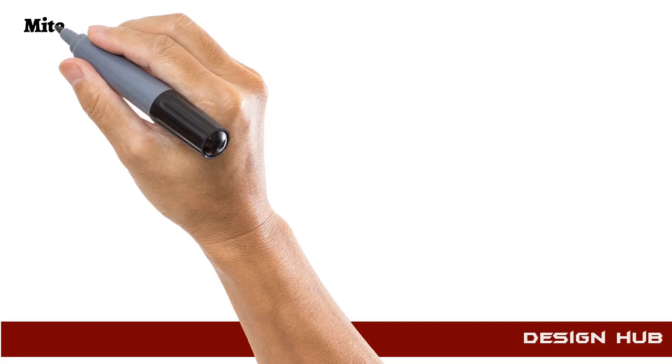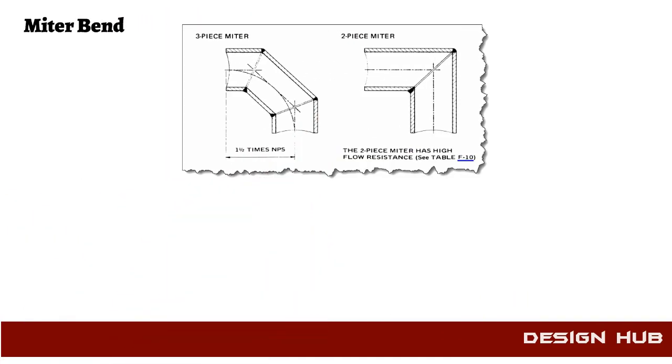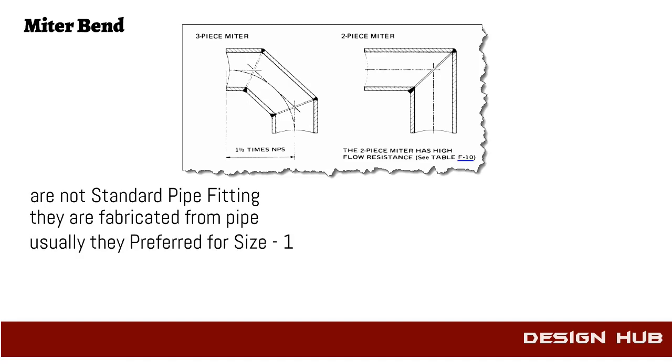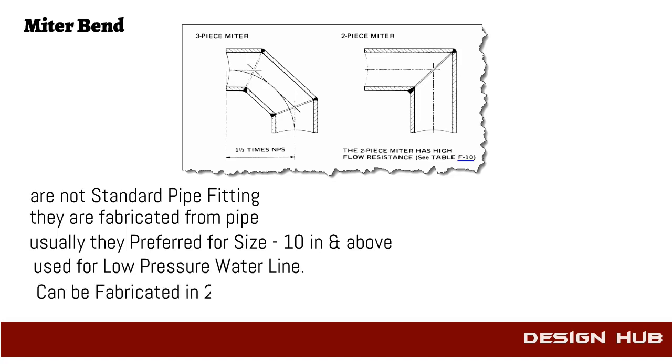Now we will discuss miter bends. These are not standard fittings; these are manufactured by cutting pipe. Miter bends are manufactured in 2, 3, or 5 pieces. This type of fitting is preferred above 10 inch. These are used for low pressure water lines.